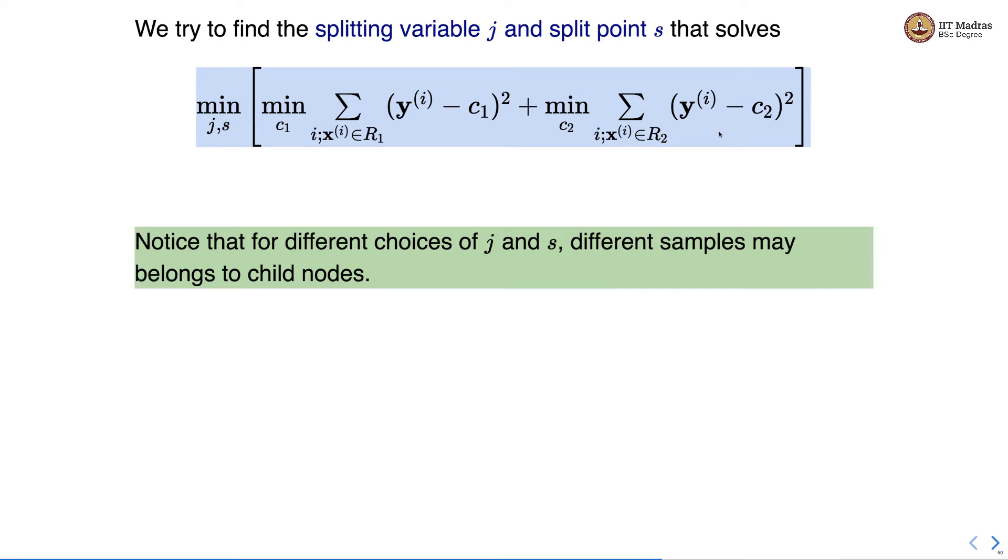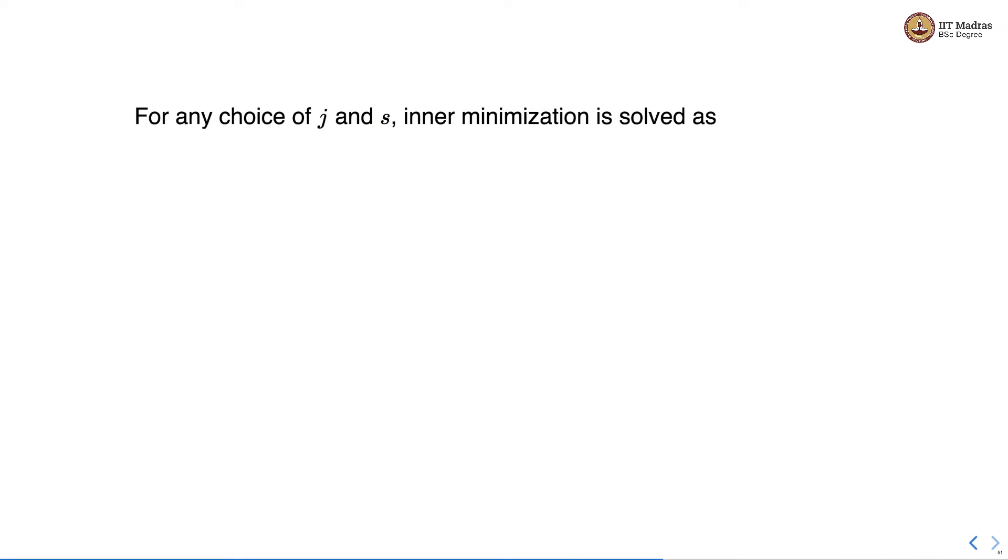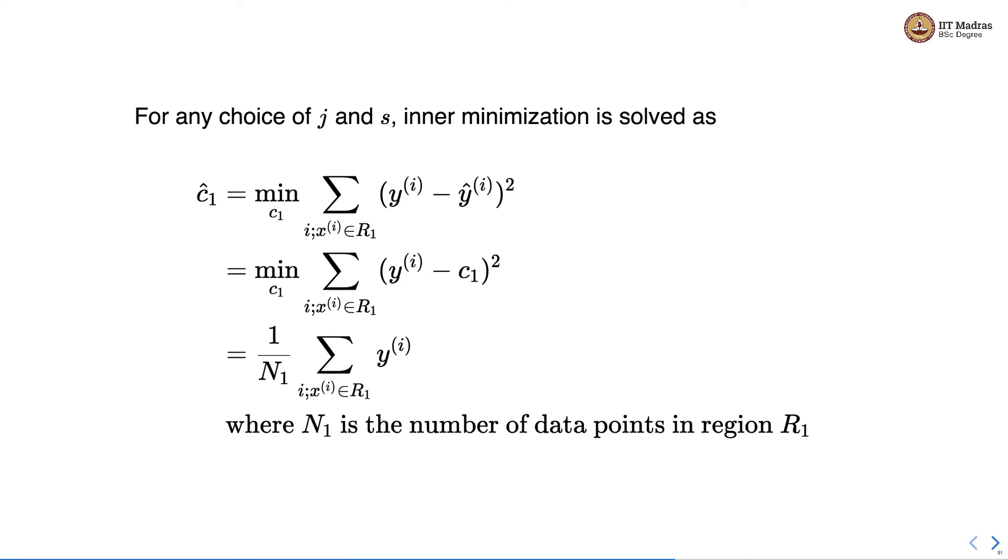Notice that for different choices of j and s different samples may belong to different child nodes. For any choice of j and s inner minimization can be solved as follows.